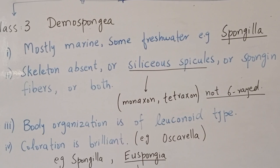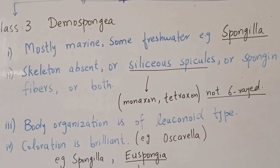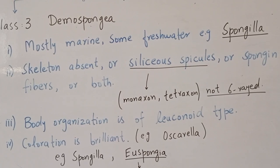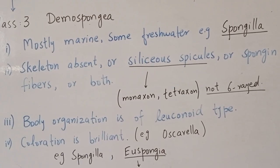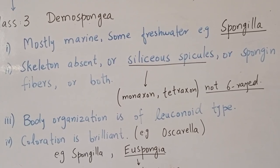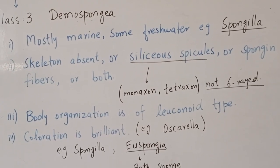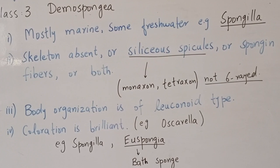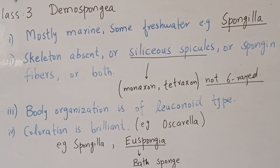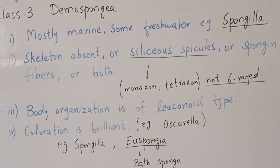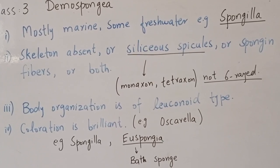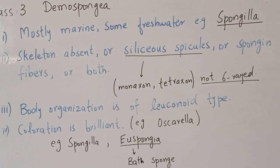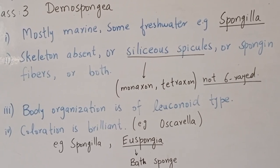The brilliant coloration in Demospongia is due to pigments present in their amoebocytes. A well-known example is Oscarella, which is brilliantly colored. Other examples include Spongilla, the freshwater sponge, and Euspongia, commonly known as the bath sponge — which has no spicules, only spongin fibers, and is used for bathing purposes.